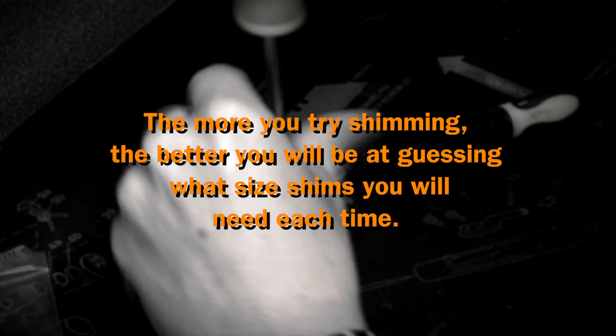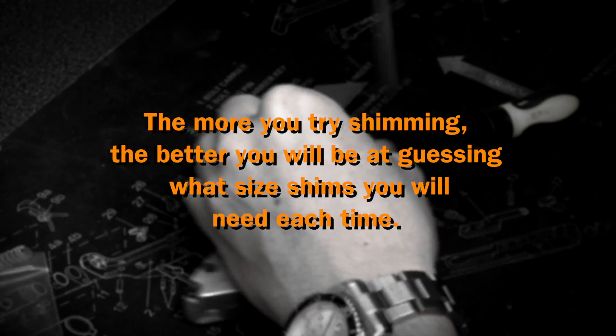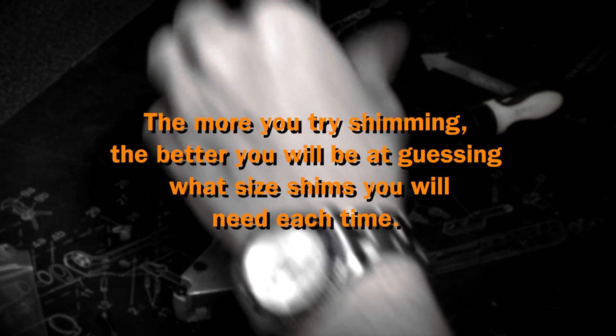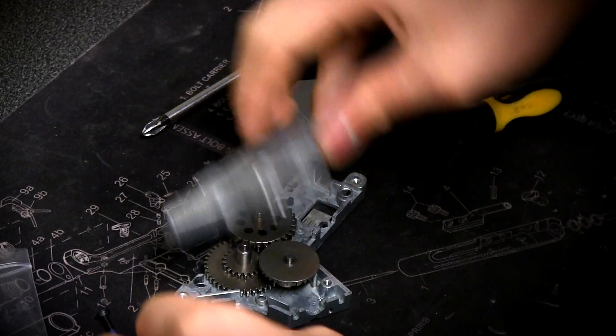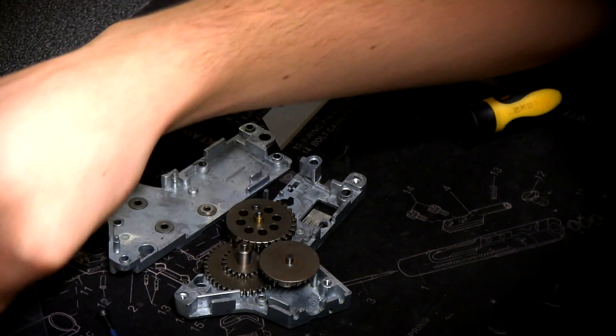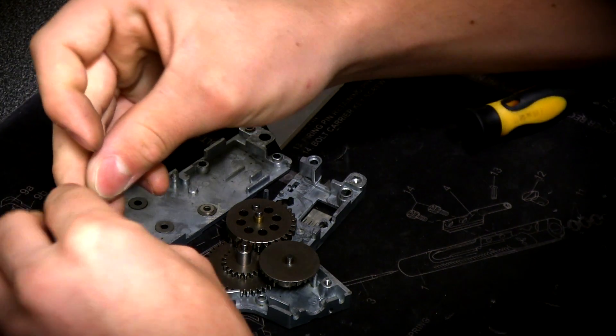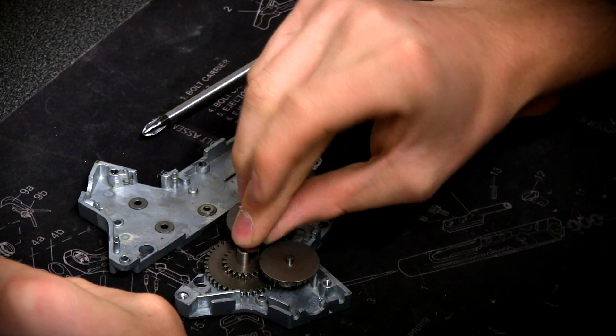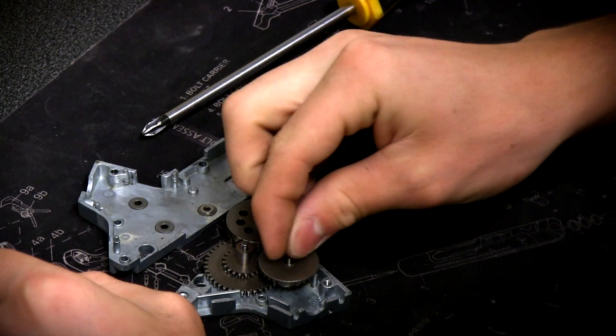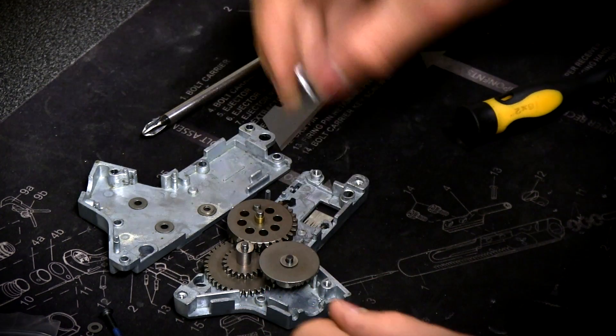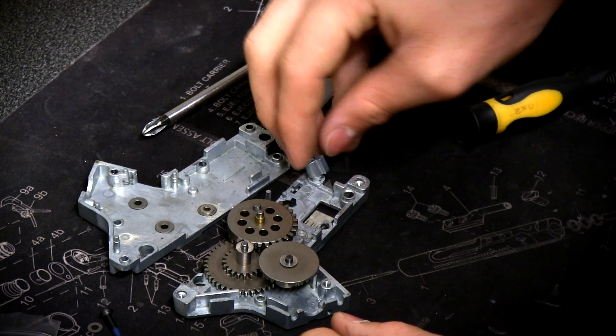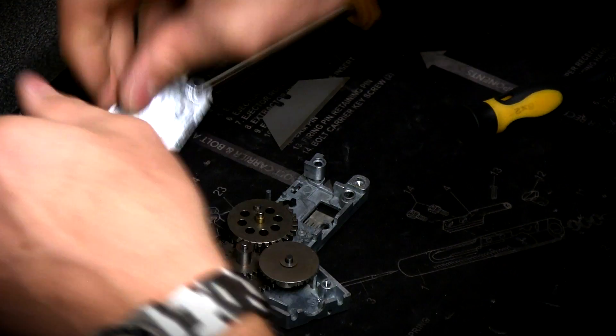Go ahead and take it apart one more time here. Again, 0.1 mil on our spur and bevel. Give that a try, see where we're at.